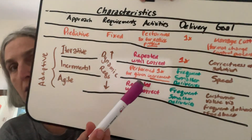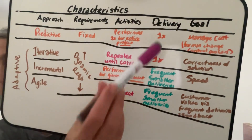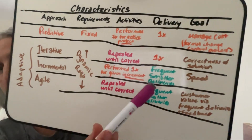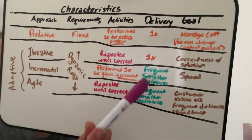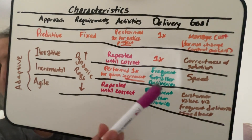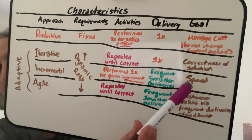That's why instead of one-time delivery like predictive or iterative, we have frequent, smaller deliveries. The goal here is speed, because value isn't realized until it's in the hands of those who can deem it valuable. And that's a good recap of incremental.